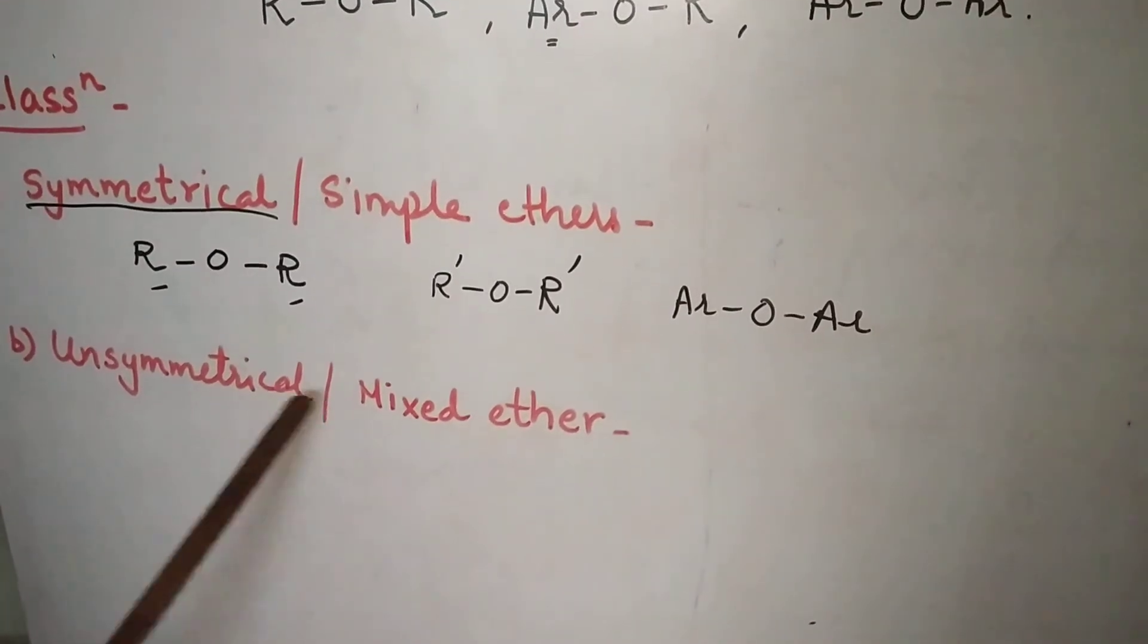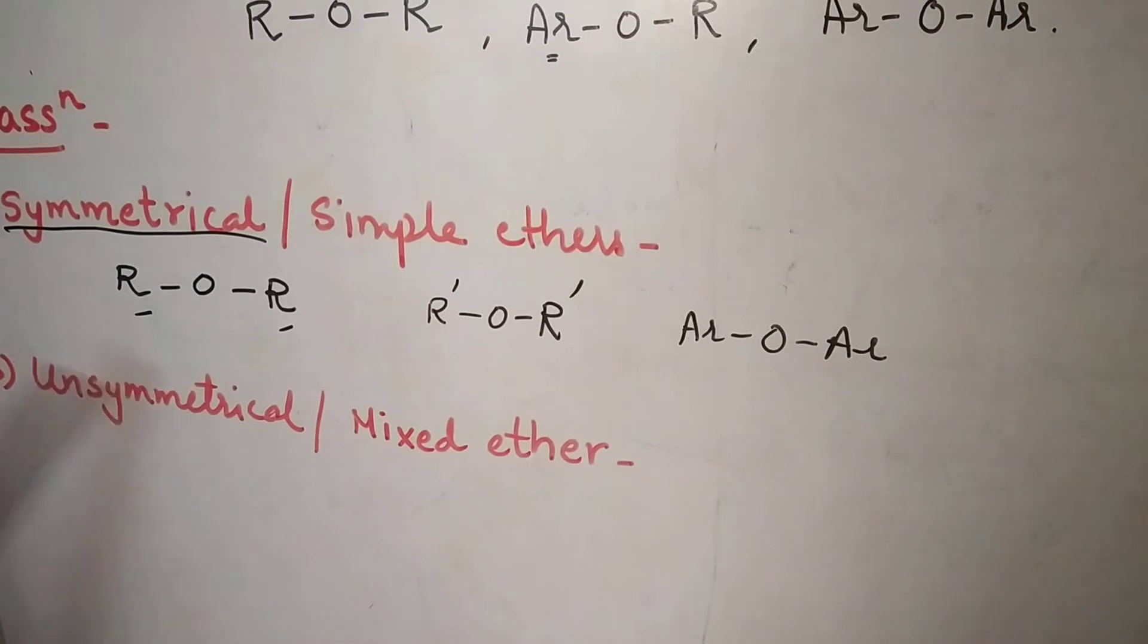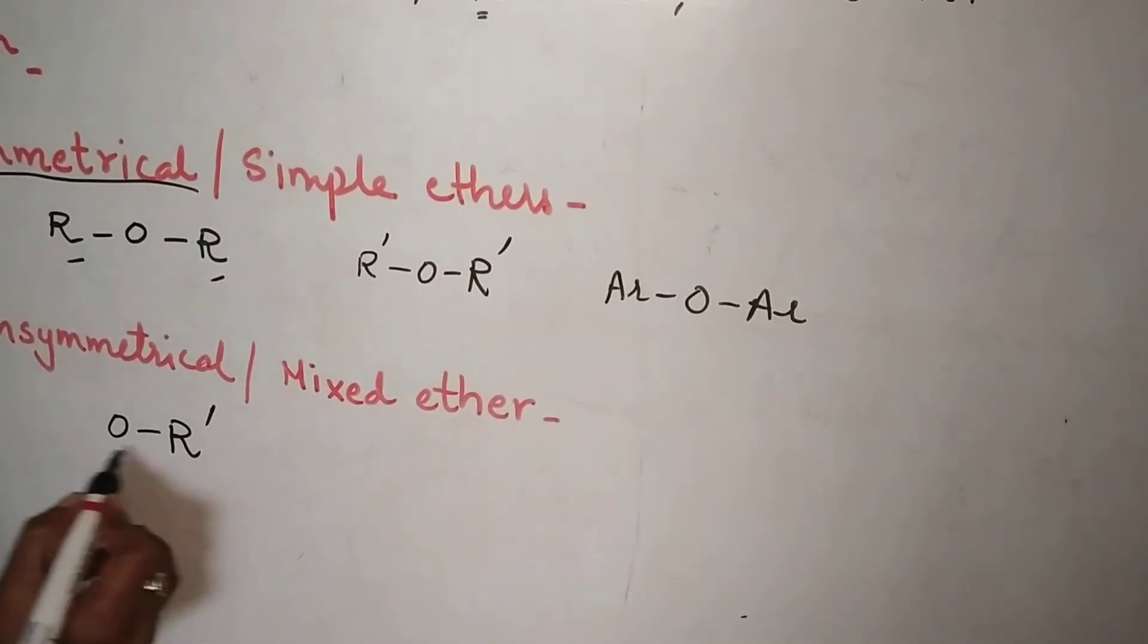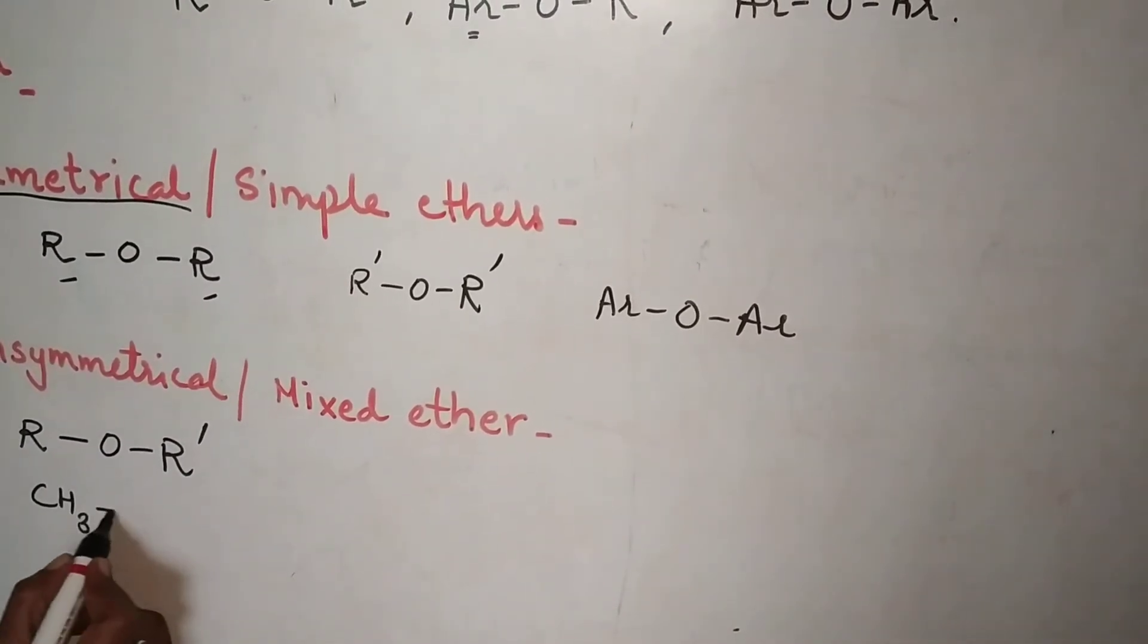And what is unsymmetrical ether or mixed ether? When the two R groups which are attached to oxygen are different. So you can have example, we can write this as O R dash and other is R.